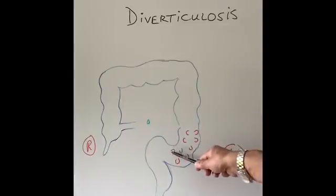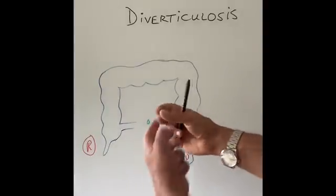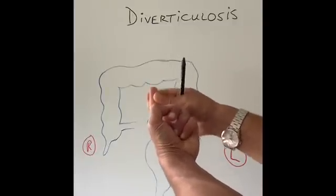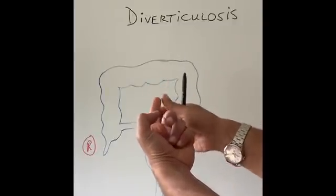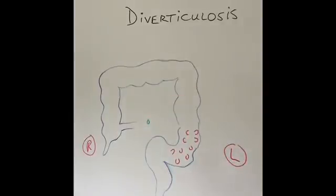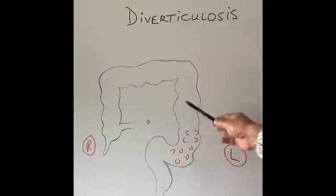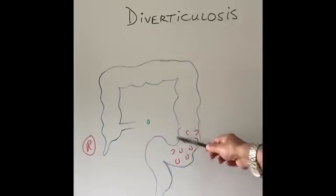Sometimes these pockets can trap things like stool or seeds, and they can get infected. That condition is called diverticulitis. These little pockets get very red and inflamed, and can develop pus inside them and even around them.